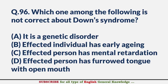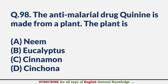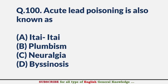Which one among the following is not correct about Down syndrome? — Answer B: Affected individual has early aging. Insects that can transmit disease to humans are referred to as — Answer C: Vectors. Anti-malarial drug quinine is made from which plant? — Answer D: Cinchona. Hypertension is the term used for — Answer D: Increase in blood pressure. Acute lead poisoning is also known as — Answer B: Plumbism.